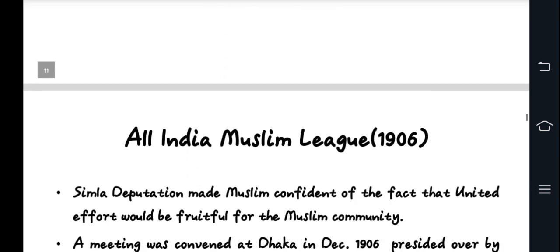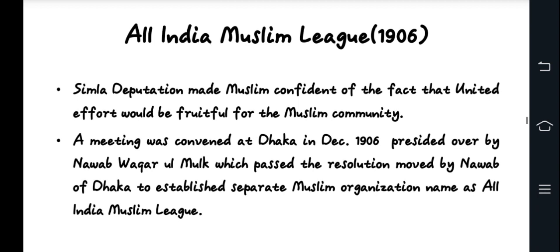The Shimla Deputation was a significant organized political activity in which Muslims demanded political representation. This was the foundation of political activism. The All India Muslim League was formed in December 1906 in Dhaka. Nawab Salimullah and other prominent leaders formed it to advocate for Muslim rights, with the main goal being to promote and protect Muslim interests and increase political participation.